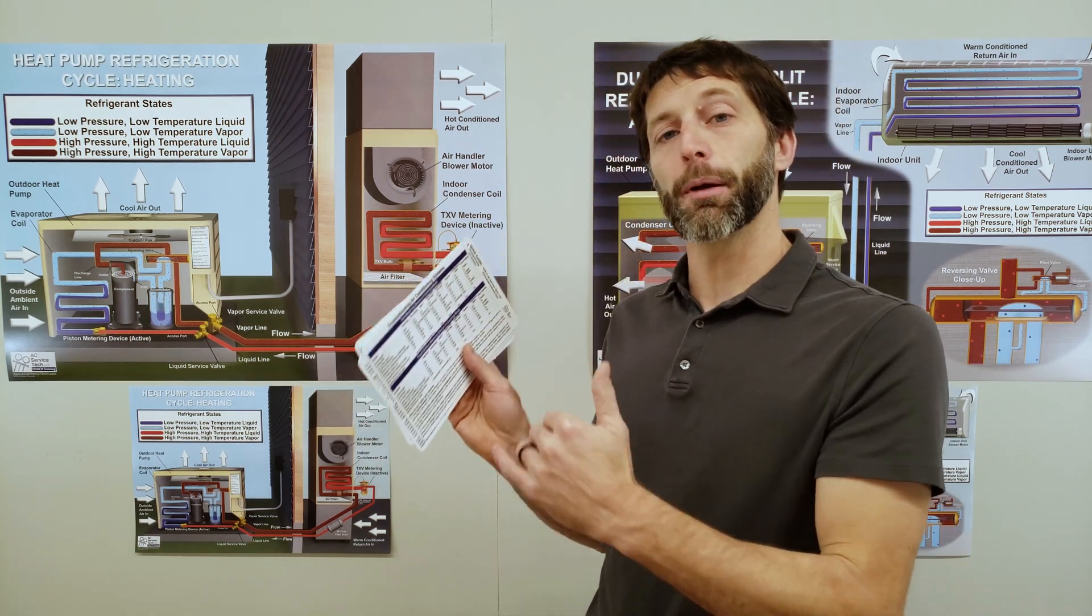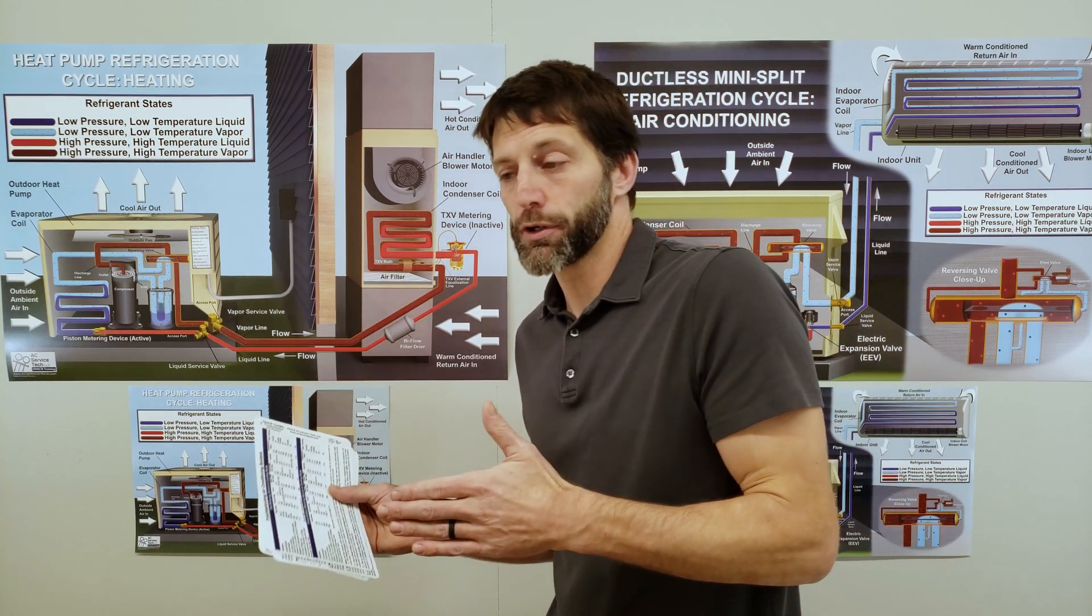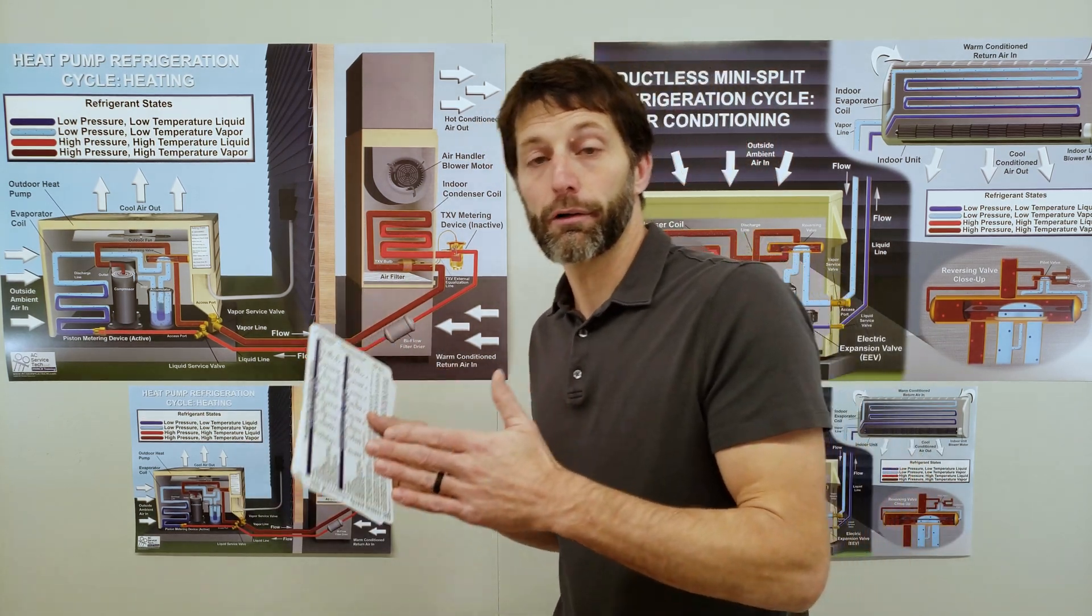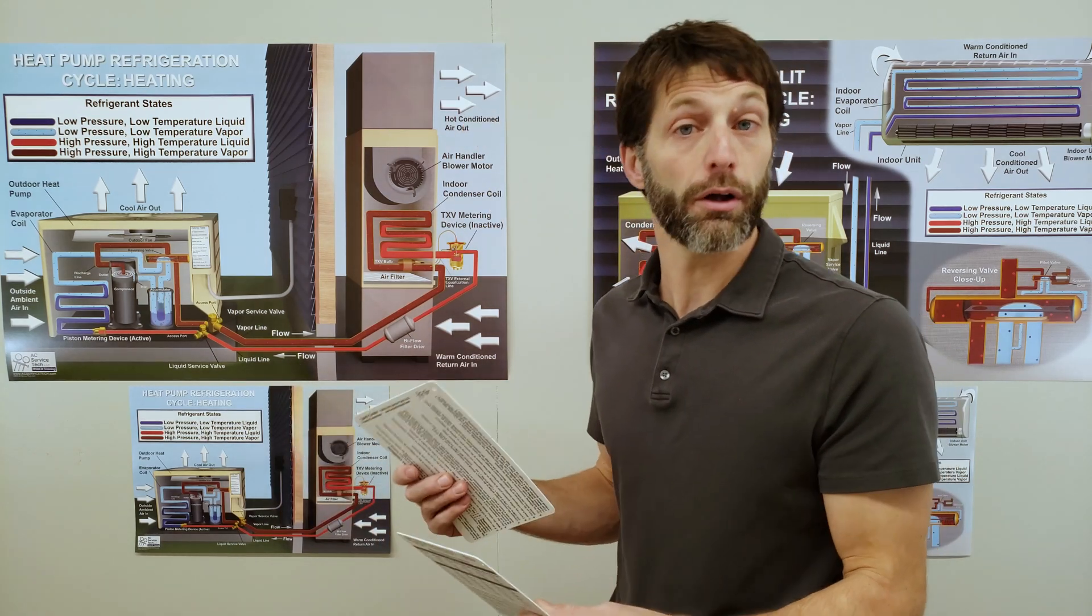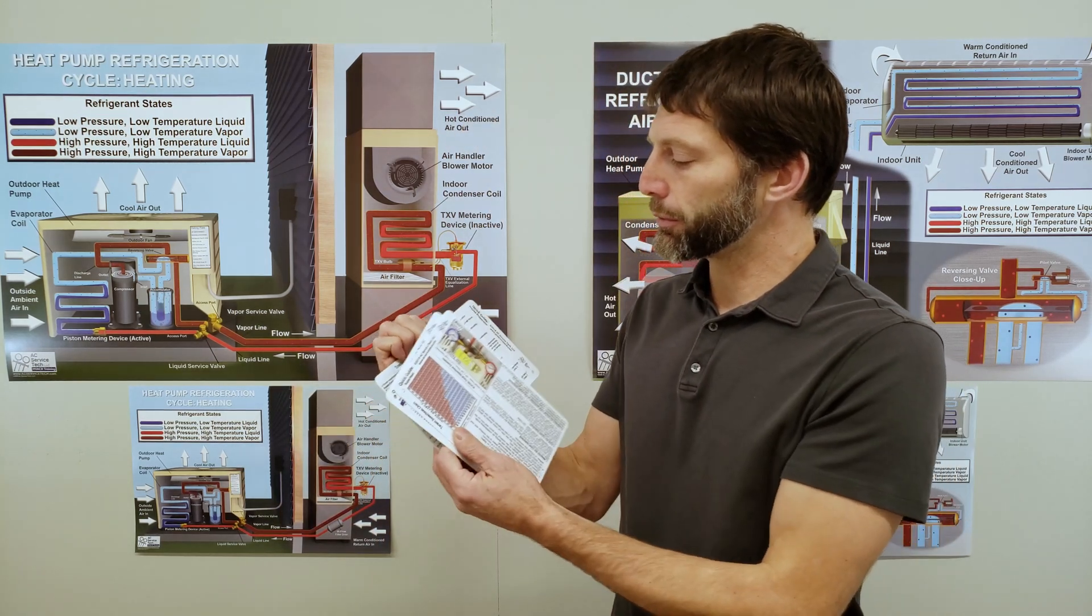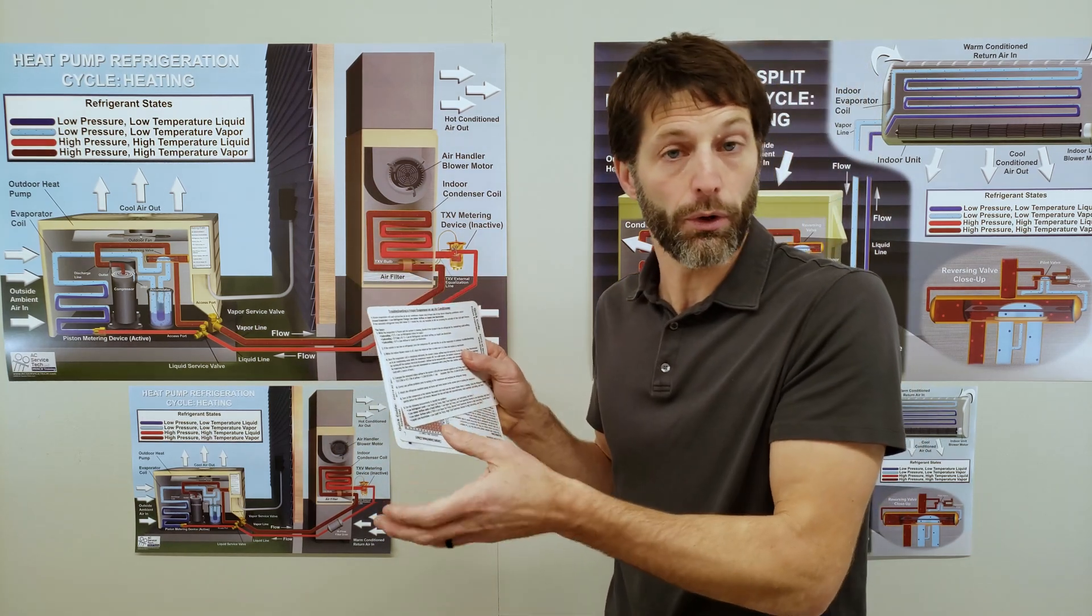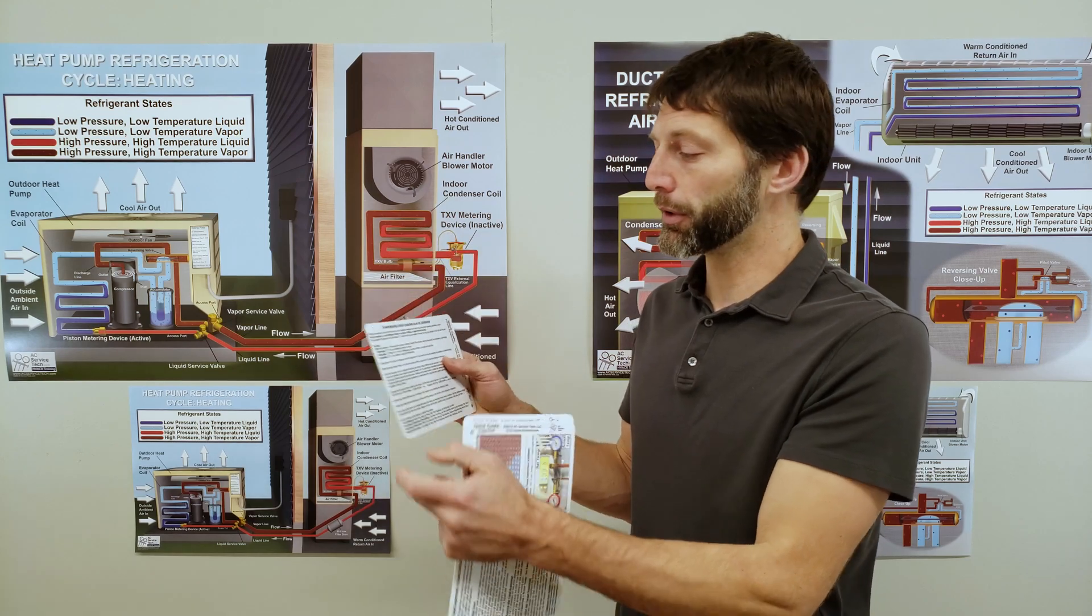So based on that, you're going to be able to tell what the problem is. Are we low on refrigerant? Is the TXV bad? You're going to be able to tell, is it a low airflow problem? So you kind of know where to look. And right here, you have a step by step guide on troubleshooting if there's a frozen evaporator coil.